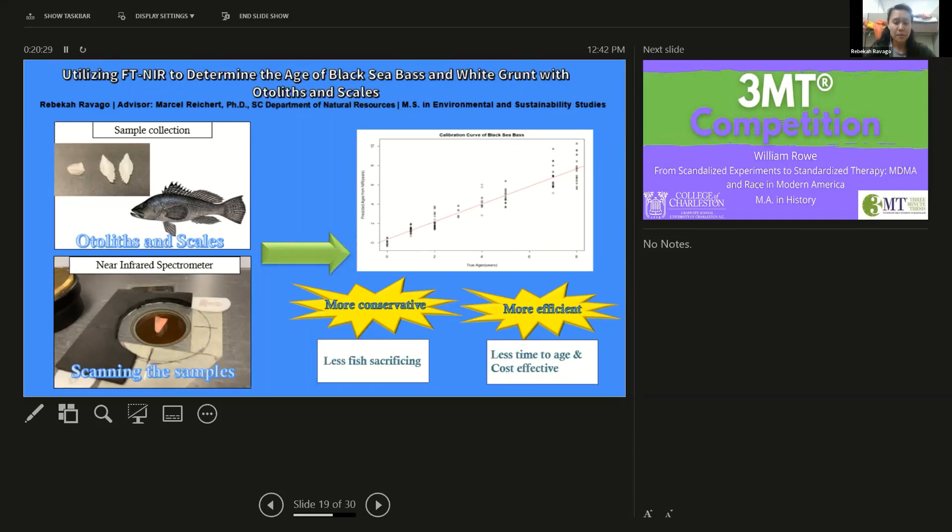My question is, can scales be a reliable structure to use with near infrared? Because the otoliths have to be dissected, whereas scales can be easily plucked. As you see on the left for sample collection.